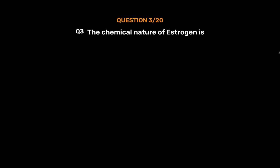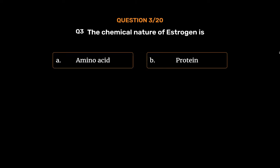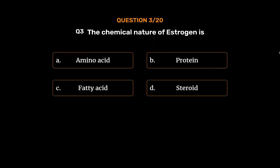Question 3: The chemical nature of estrogen is — Option A: Amino Acid. Option B: Protein. Option C: Fatty Acid. Option D: Steroid.